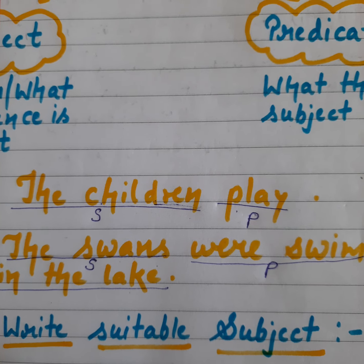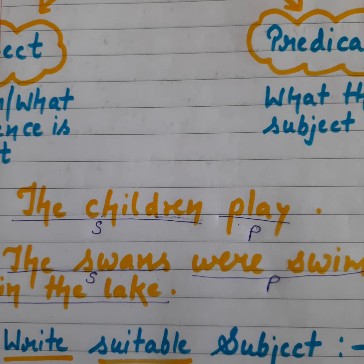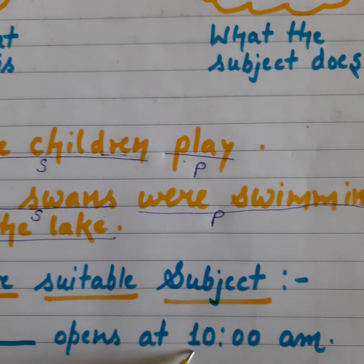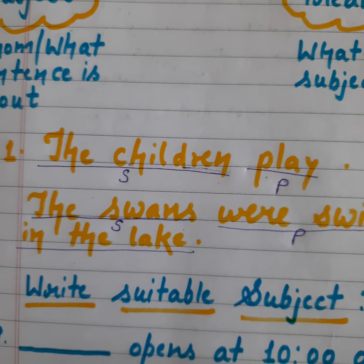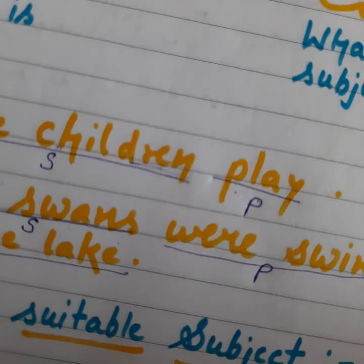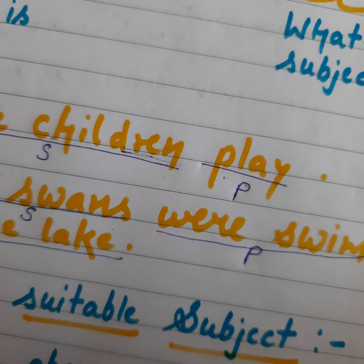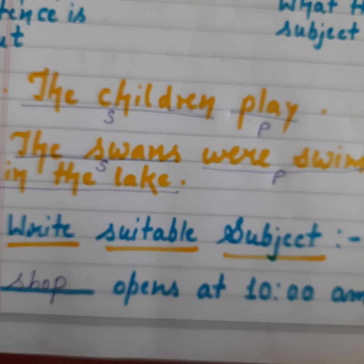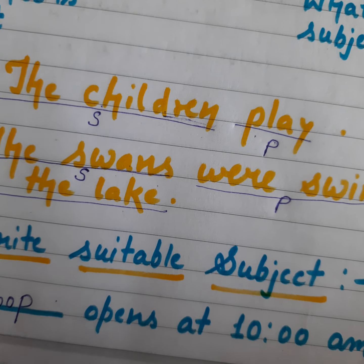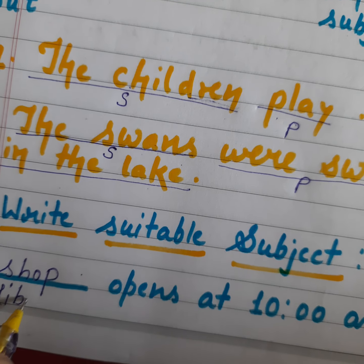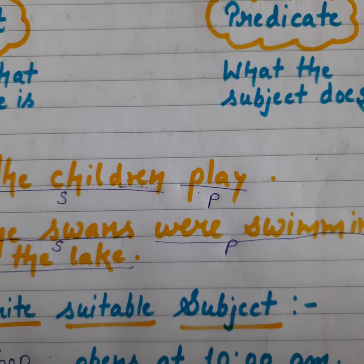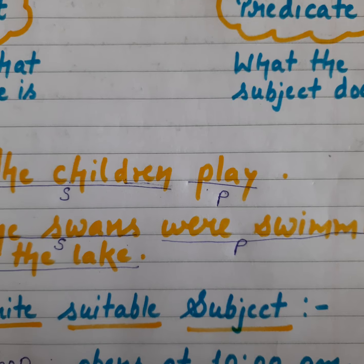Now one more kind of question you will be asked in your book. See the first example: dash opens at 10 a.m. Anything can be written here — you can write shop, or library. Shop opens at 10 a.m., or library opens at 10 a.m. Anything can open at 10 a.m.